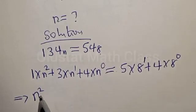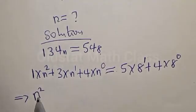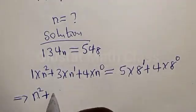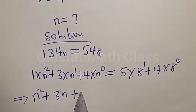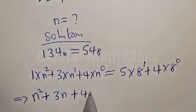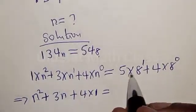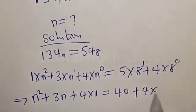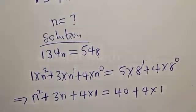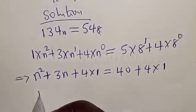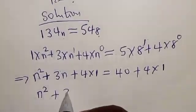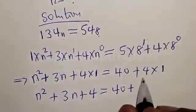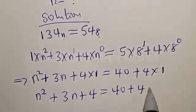We have 1 times n squared, that is n squared, plus 3 times n raised to power 1, that is 3n, plus 4 times n raised to power 0 is 1. On the right side, 8 raised to power 1 is 8 times 5, that is 40, plus 4 multiplied by 8 raised to power 0, which is 1.